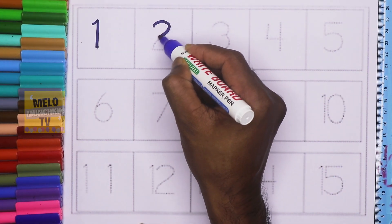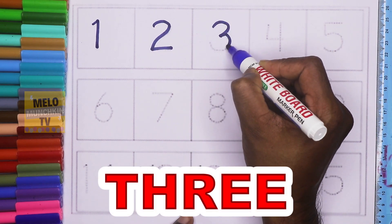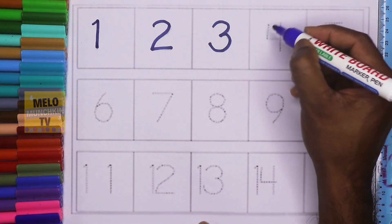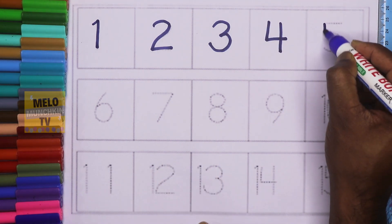3, t-h-r-e-e, three. 4, f-o-u-r, four. 5, f-i-v-e, five.